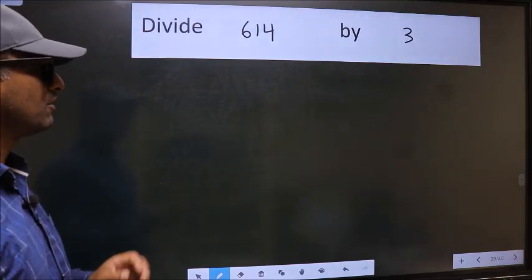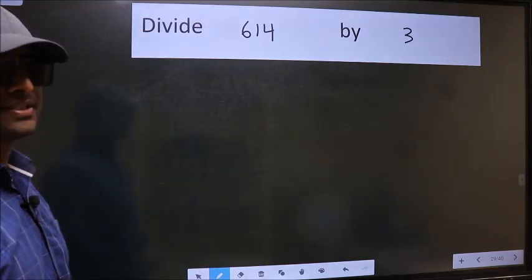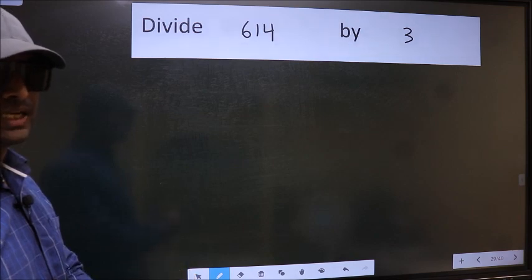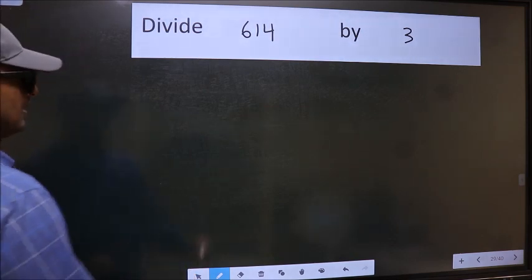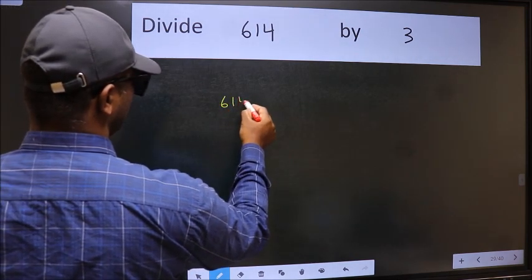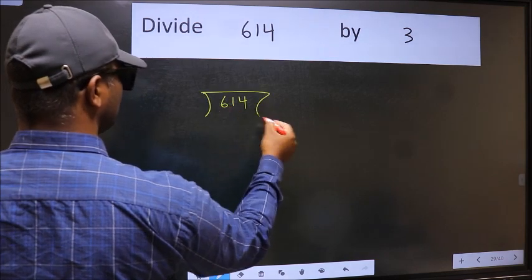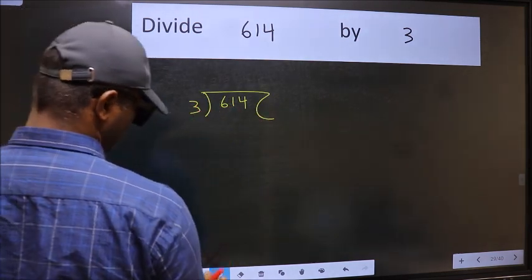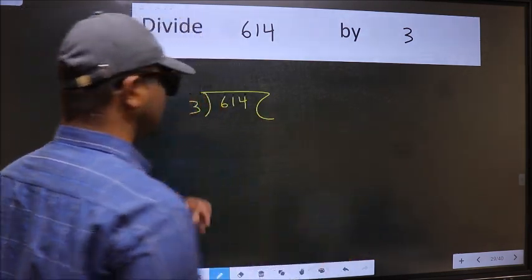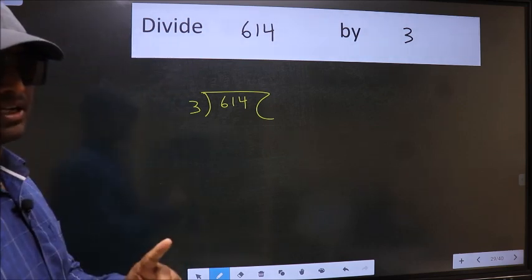Divide 614 by 3. To do this division, we should frame it in this way. 614 and 3 here. This is your step 1.